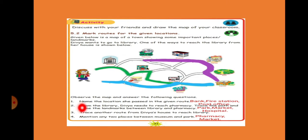First question is name the location she passed in the given route. So this is the route she went and whatever she met in that route. See here she met a bank and a fire station, and finally post office while going to library. So bank, fire station and post office.